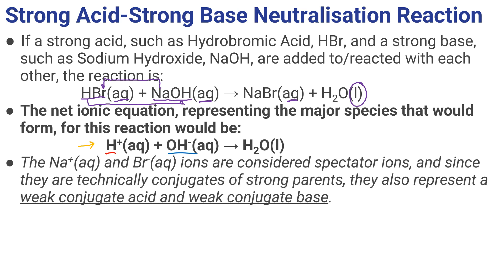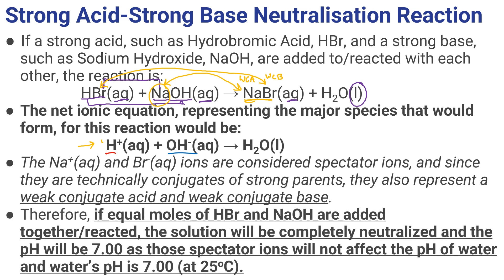Those other NaBr ions in solution are just spectator ions. We should also be able to say those Na+ ions that come from NaOH — a strong base — are a very weak conjugate acid. That Br-, which came from a very strong acid, is actually a very weak conjugate base. So although those are spectator ions, they come from very strong parents, so they are very weak conjugates, and therefore those ions do not affect our pH at neutralization.